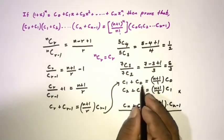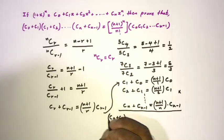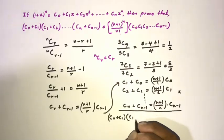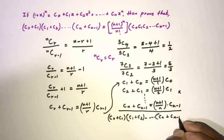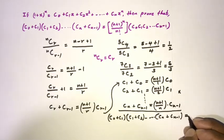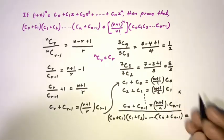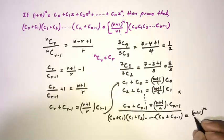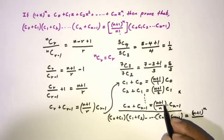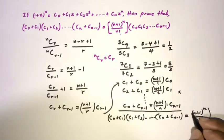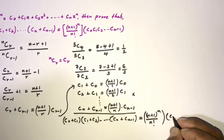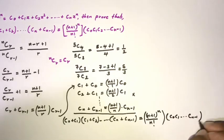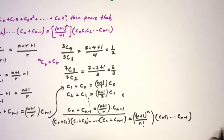Now multiplying all these expressions together: (C0 + C1)(C1 + C2)...(C(n-1) + Cn) equals (n + 1)^n over n factorial, times C0 times C1 times ... times C(n-1). This is the final answer. If you like this type of video, please subscribe to the channel. Thank you for watching.